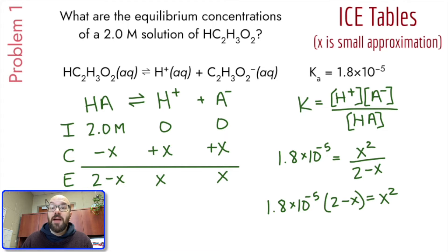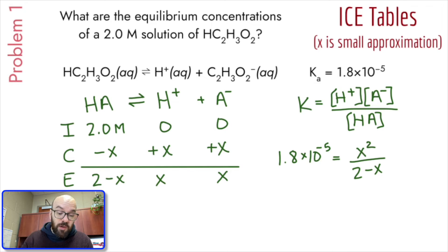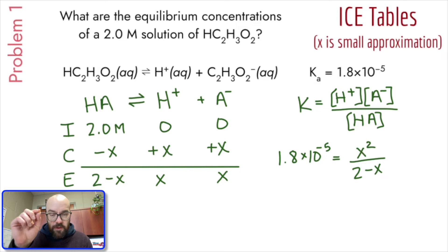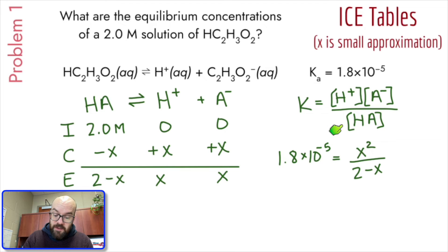On the AP Chemistry test, they never ask you to use the quadratic formula because it takes too much time. They design problems so you can use the x-is-small approximation. So as soon as you see a quadratic coming, use the approximation instead. First, look at the K value — it's very small, times 10 to the negative fifth. A small K means you have almost entirely reactants and very little products.